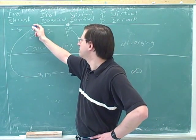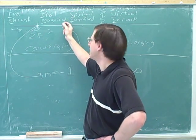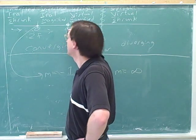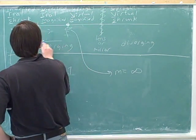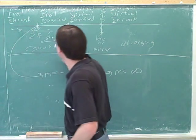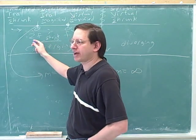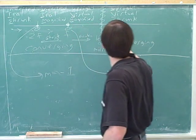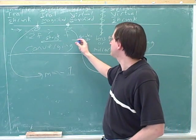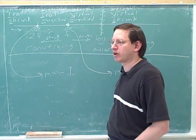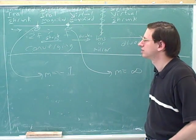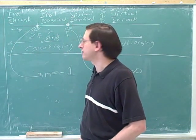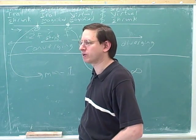So it's pretty obvious that this is where the image is the same size as the object. You want to label that in your diagram. Any time you move away from this point, the image is shrinking. As we move the object in this direction for a converging device, the image gets smaller and smaller. What happens if we move the object in this region for a converging device — is it getting bigger and bigger or smaller and smaller? Smaller.